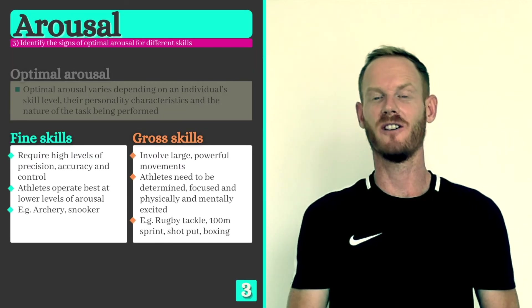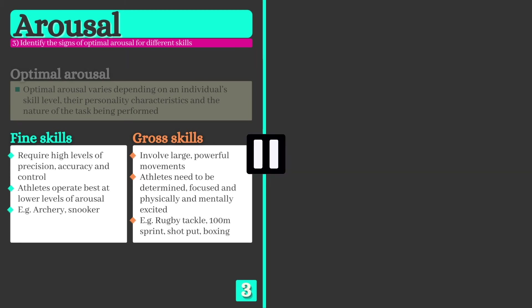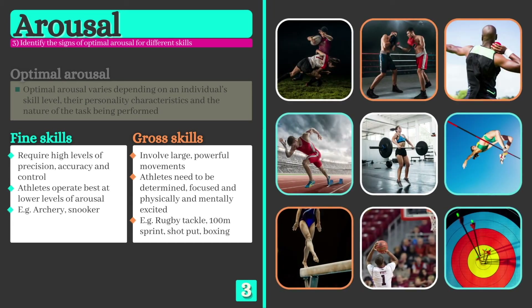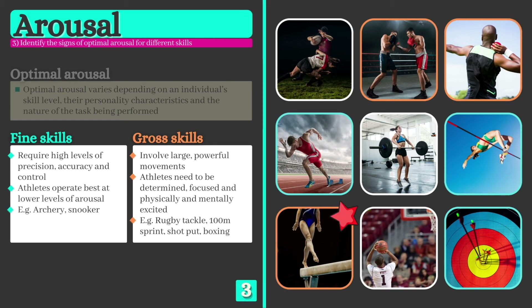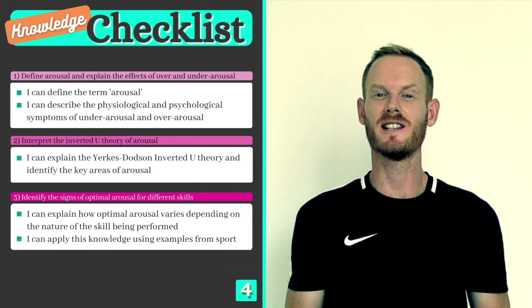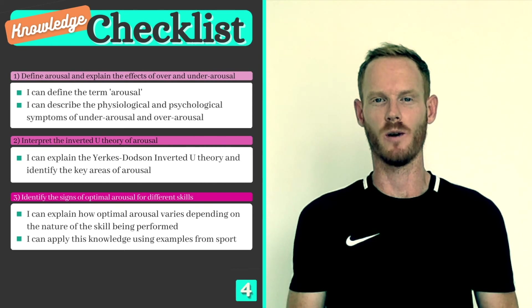You will need to be able to identify the level of arousal required for a variety of different skills, so why not pause the video now and have a go at ranking these examples. You should place the skill with the highest optimal level at the top. Don't worry if your list isn't exactly the same as the one presented here, as ranking skills isn't an exact science. Gross skills that require physical readiness, drive and determination require higher levels of arousal, while fine skills rely on a calm, relaxed approach and are performed best when arousal is lower. You've just covered everything you need to know on topic 9.3 Arousal. During our next lesson we'll look at the causes and symptoms of anxiety in sport, so make sure you come back for that one. I hope you found this lesson useful and I'll see you in the next one.